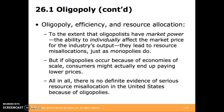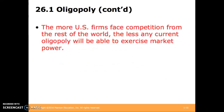While oligopolists with high market power can lead to resource misallocations similar to monopolies, oligopolies that occur because of economies of scale might lead to consumers paying lower prices. There's no definitive evidence of serious resource misallocation in the United States because of oligopolies. The more U.S. firms face competition from the rest of the world, the less any current oligopoly will be able to exercise market power.